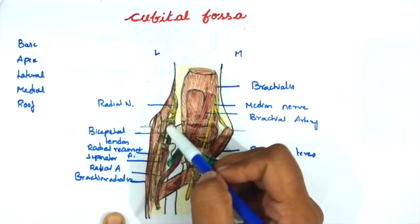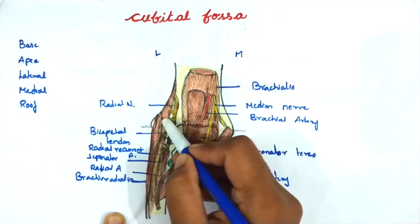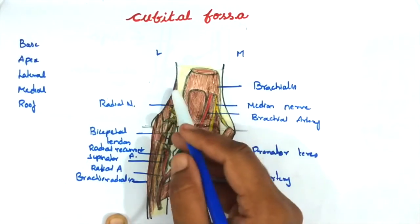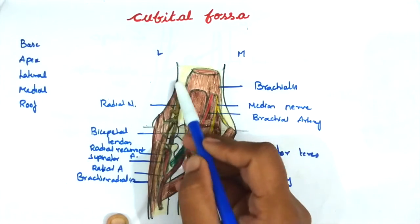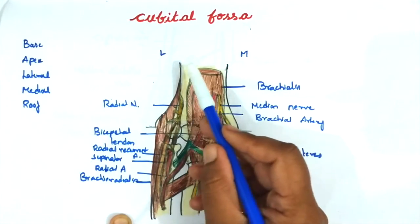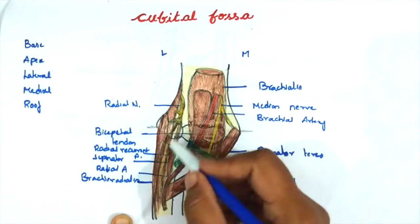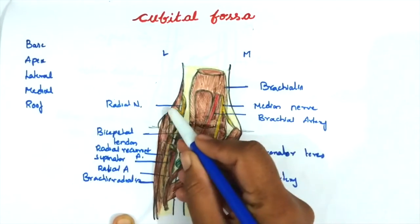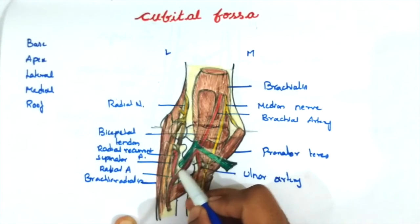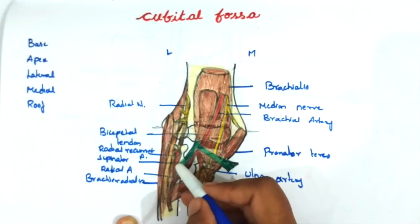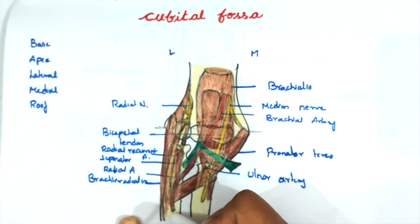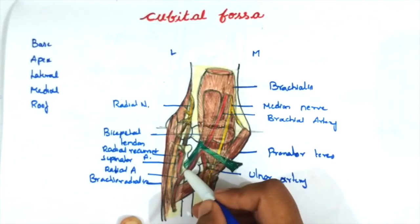The radial recurrent artery makes an anastomosis with the anterior descending branch of the profunda brachii artery — the elbow joint anastomosis in front of the lateral epicondyle. The profunda brachii artery is a branch of the brachial artery. After giving off this branch, the radial artery leaves the cubital fossa through the apex point.